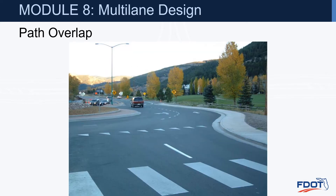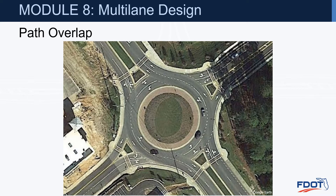Here's an example of path overlap issues. At this particular entry, a vehicle is directed toward the center island, so they have to work to get over into the leftmost circulatory lane, while it's actually easier for the vehicle in the rightmost lane to get into that same lane. At the entry, vehicles in both lanes are unsure where they're supposed to go, impacting operations. Another example shows that if you extend the lane line between the two entering lanes into the roundabout, the rightmost lane is directed into the left circulatory roadway lane on multiple approaches, creating operational and potential safety issues due to poor entry design and path overlap.